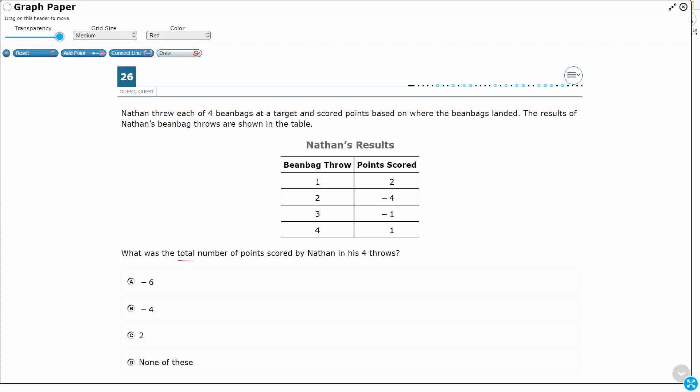Throw 1 is 2 points, plus throw 2 is negative 4. So plus negative 4 looks a little bit weird. So typically we'll put some parentheses around it to separate the two signs. And then we're going to add another negative 1, so that's going to look weird. And then we've got a positive 1. So that's going to equal my total. That's the expression I need to simplify.